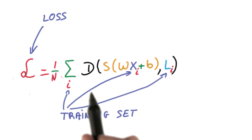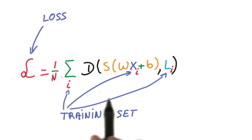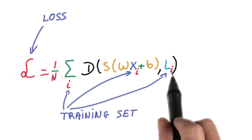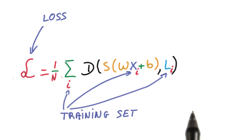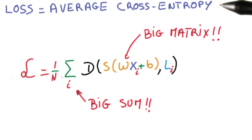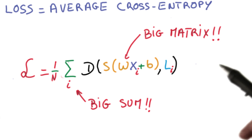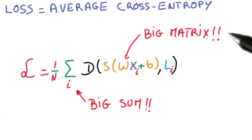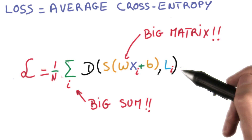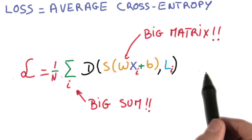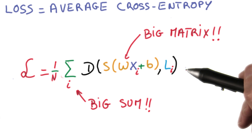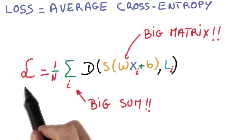One thing you can do is measure that distance averaged over the entire training set for all the inputs and all the labels that you have available. That's called the training loss. This loss, which is the average cross entropy over your entire training set, is one humongous function. Every example in your training set gets multiplied by this one big matrix W, and then they get all added up in one big sum. We want all the distances to be small, which would mean we're doing a good job at classifying every example in the training data. So we want the loss to be small.